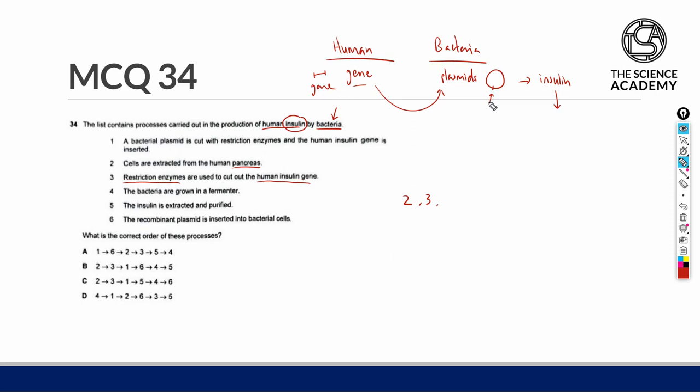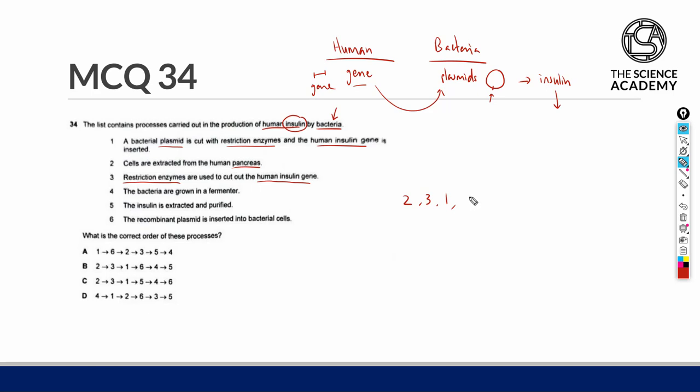After obtaining this piece of the gene that encodes the insulin, we need to incorporate it into the bacterial plasmid. So, step 1 has to be the next step where we obtain a bacterial plasmid. We cut it so that there is a space for us to insert this gene into. After incorporating the insulin gene into the plasmid, this new plasmid is called a recombinant plasmid and it has to be thrown back into the bacterial cell. The plasmid has to be allowed back into the bacterial cell which gives the next step to be 6.